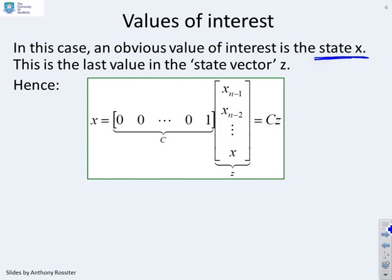So this is what we can do. We can define a matrix C, you can see it here, which is all zeros apart from one in the very last column. And if I multiply z by this C, clearly this is just going to give me x. So I can extract a value of interest here, x, by multiplying the vector z by an appropriate matrix C.